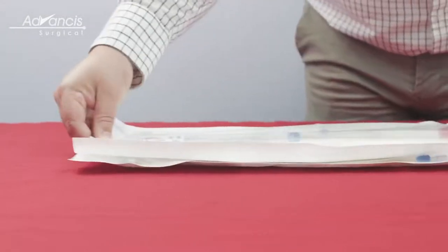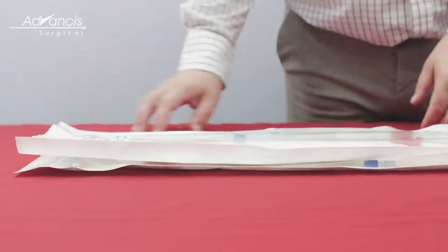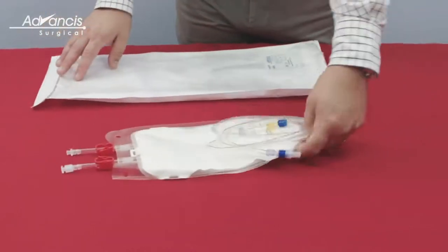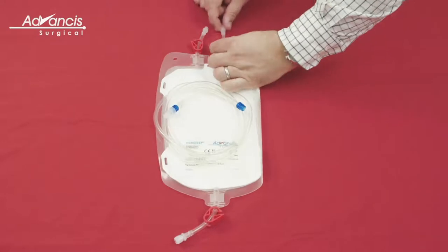Open the Hemosep cell concentrator kit and remove the two bags from the box. Open the cell concentrator bag. Close clamps B and C.